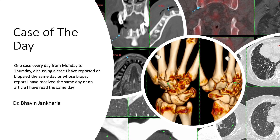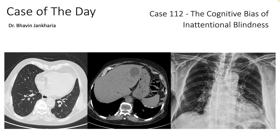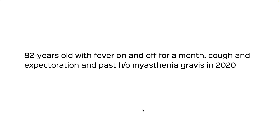Today is Wednesday and we have our 112th case, titled 'The Cognitive Bias of Inattentional Blindness.' This is an 82-year-old with fever on and off for a month, cough and expectoration, and a past history of myasthenia gravis in 2020.